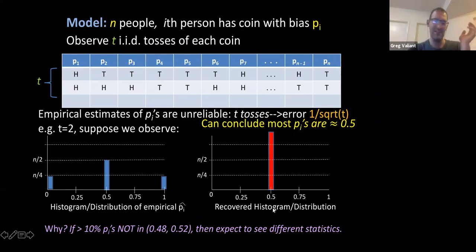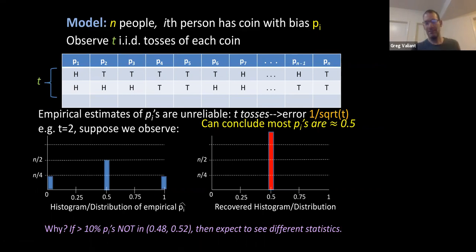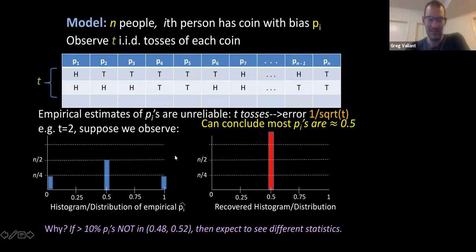A different way of saying this: if a significant fraction of the p_i's were not between 0.48 and 0.52, we would expect to see something different than what we saw. Obviously this is a slightly cherry-picked example, but to what extent can we hope to recover the true distribution from the empirical one in general? It's almost too good to be true: I'm saying we flip each coin twice and can very accurately recover essentially almost all of the p_i's.